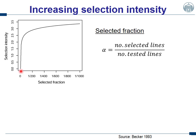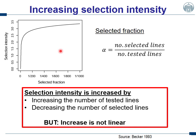What is very important to see is that the increase of the selection intensity with increasing number of tested lines — or decreasing selected fraction — is by far not linear. It's more asymptotic. An increase from 0 to 200 lines is of tremendous importance because the selection intensity is tremendously increased. But increasing from 600 to 800 still increases selection intensity, but very little. In summary, selection intensity is increased by increasing the number of tested lines or decreasing selected lines, but this increase is not linear.